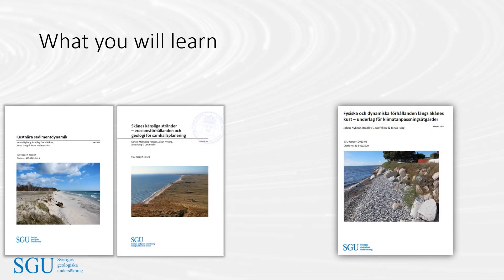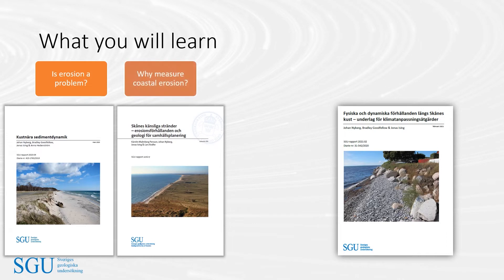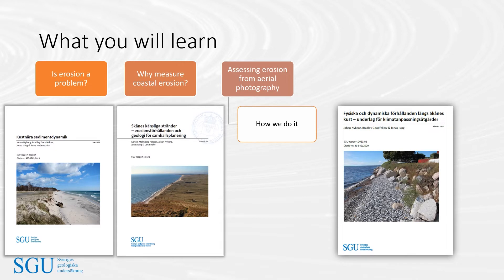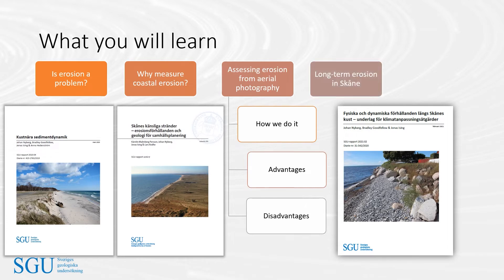Inspired by three SGU reports, I will start by briefly answering two questions: is erosion a problem, and why measure coastal erosion? I will then introduce the methodology that SGU has used to assess coastal erosion from aerial photography and present its advantages and disadvantages. Examples of long-term erosion in Skåne will be highlighted and we will conclude with a summary of planned future studies.